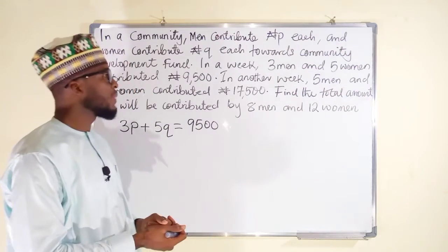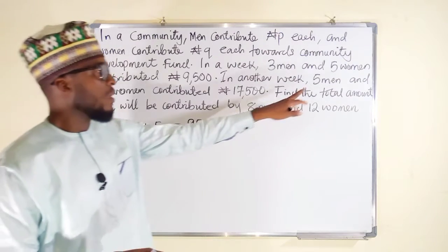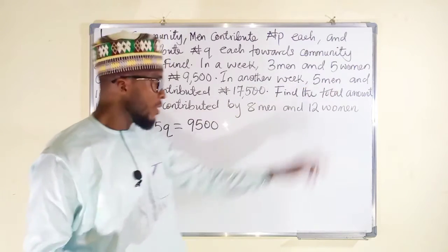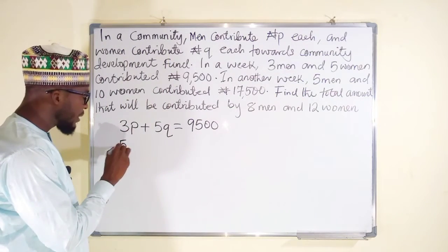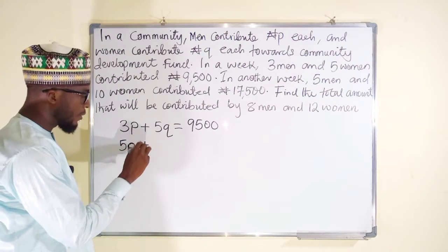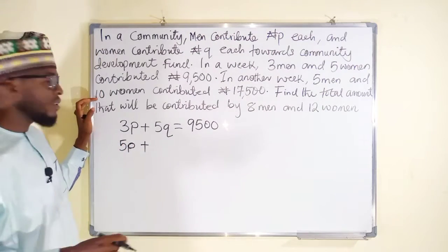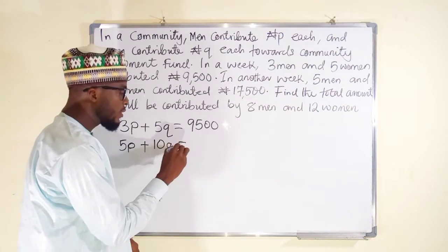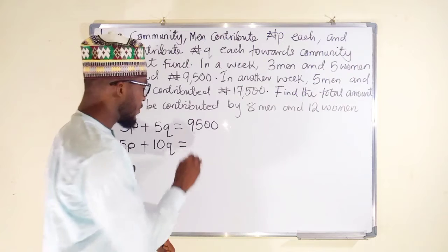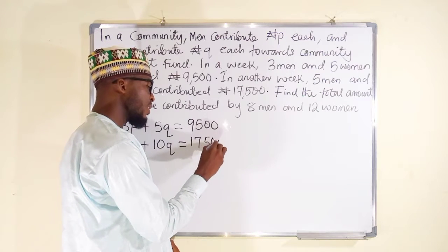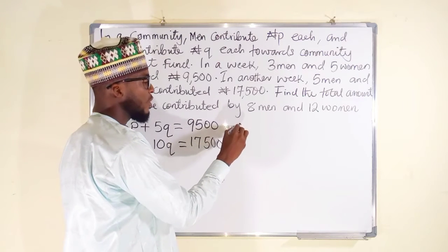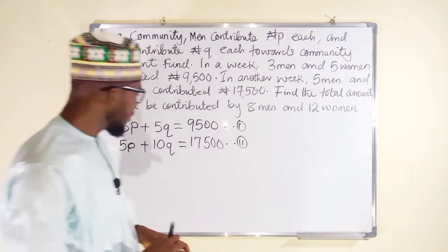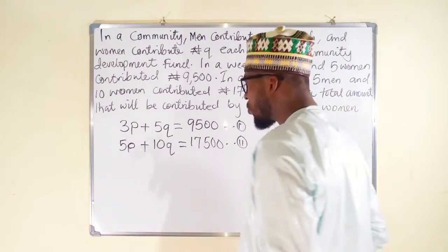In the next week the number of persons increases — we have five men, so five multiplied by P is 5P, plus ten women giving 10Q. The total amount contributed is seventeen thousand five hundred. So our second equation is: 5P + 10Q = 17,500. We have now formed two equations which we can solve.